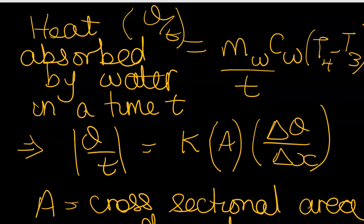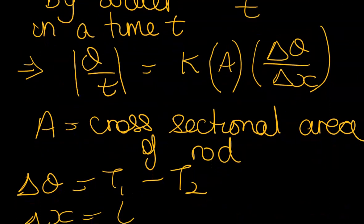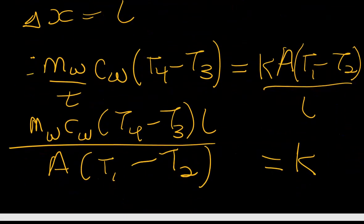And delta theta will of course be T4 minus T3. Okay? And then we work down here to get K.